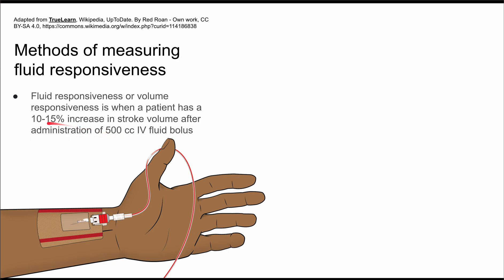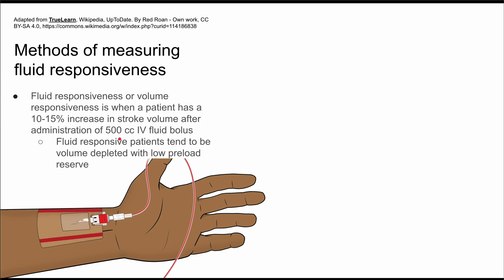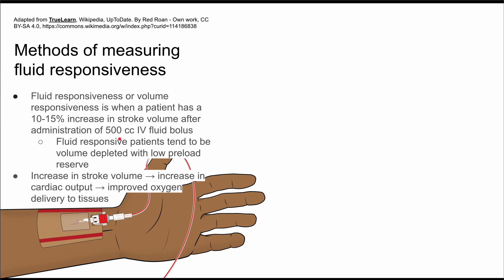This is more of an arbitrary definition. It's important to have some definition, but realistically we know it as your stroke volume going up and ideally seeing an increase in the patient's blood pressure as a result, from a standard ICU standpoint. Fluid responsive patients tend to be volume depleted with low preload reserve. A fluid bolus helps by increasing stroke volume, which increases cardiac output and improves oxygen delivery to tissues.